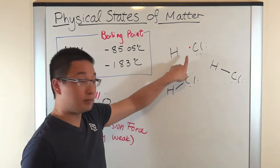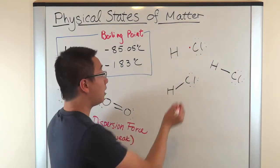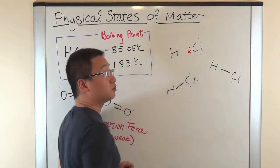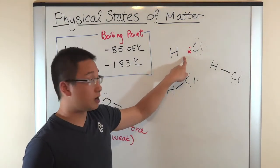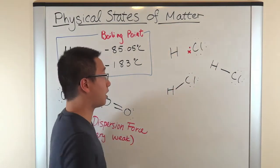So, let this dot be the electron from chlorine, and I'm going to use cross to represent the electron from hydrogen. So, it's pretty close toward the chlorine atom.